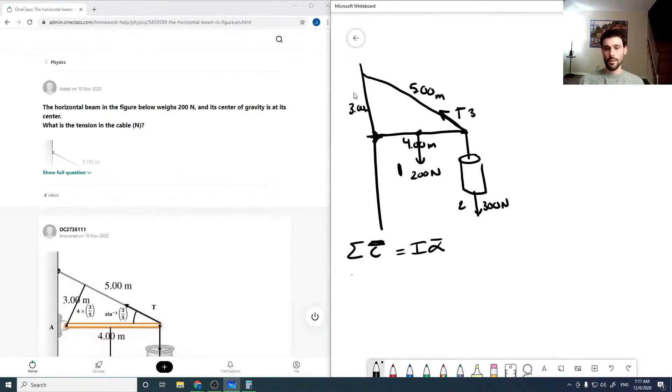Torque one is F cross r. You point your fingers of your right hand towards the force, your palm goes towards the radius, and then your thumb points in the direction of the torque. In this case, the torque would be out of the page, so we're calling this a positive torque. This would be 200 newtons times two meters, so 400 newton meters.